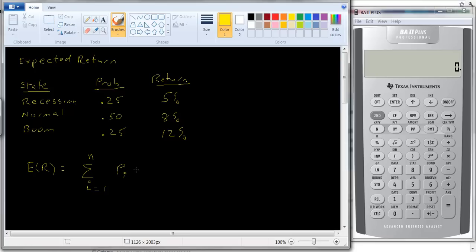Probability that you're in state of the world i times the return in state i. And if you wanted to expand that, if you don't like looking at the summation sign, it's p1 times r1 plus p2 times r2, where the p's are the probabilities, plus dot dot dot all the way out to the final state of the world, pn times rn. Probability we're in state of the world n times the return in that state of the world.